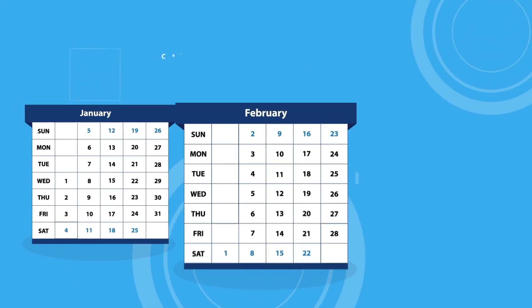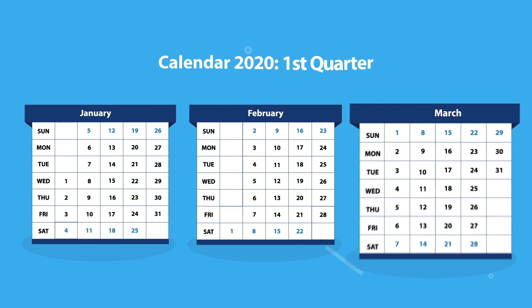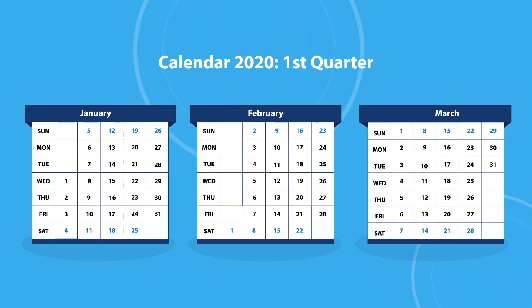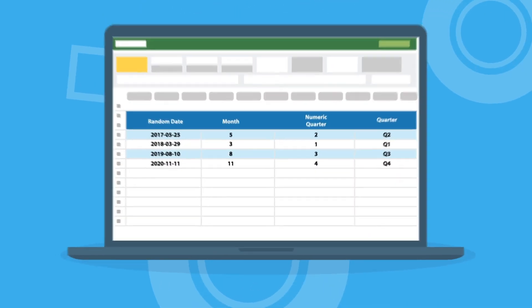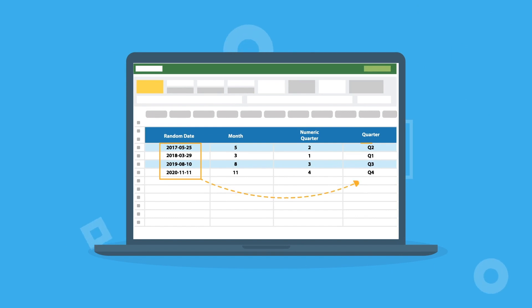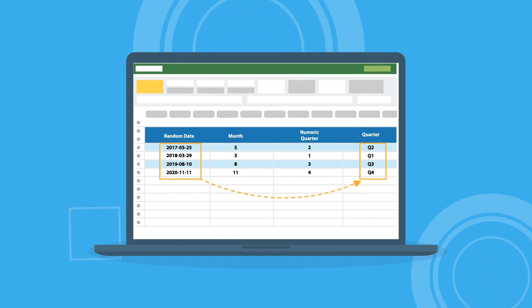A quarter refers to a three-month period, or one quarter of one year, on a company's financial calendar that establishes a period for financial reports and dividend payments.